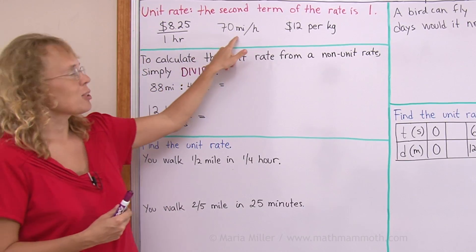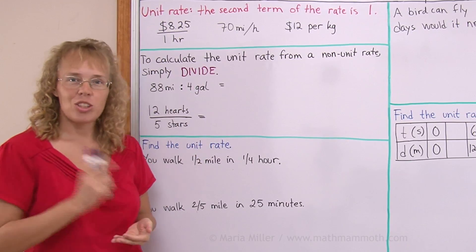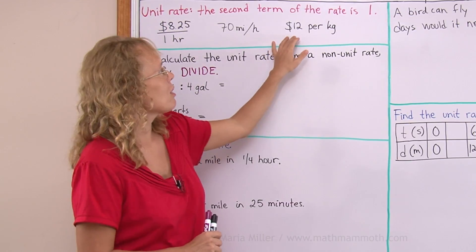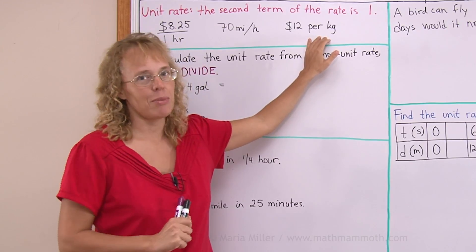Another is 70 miles per hour, but it means per one hour, so it is a unit rate. Or $12 per kilogram, per one kilogram it means.